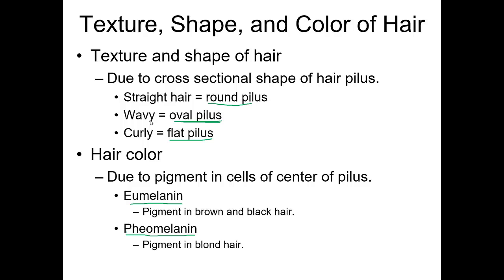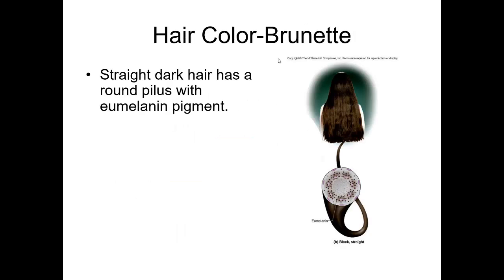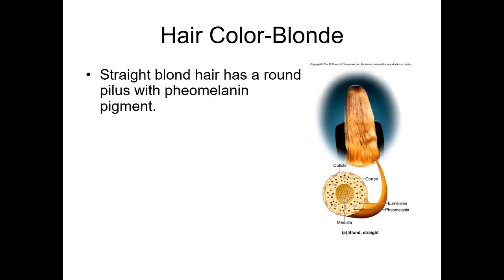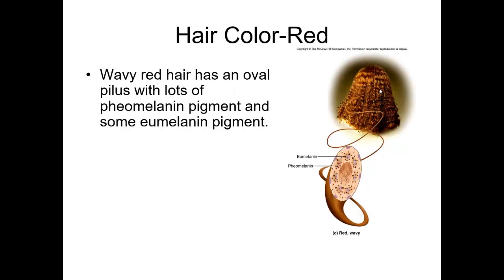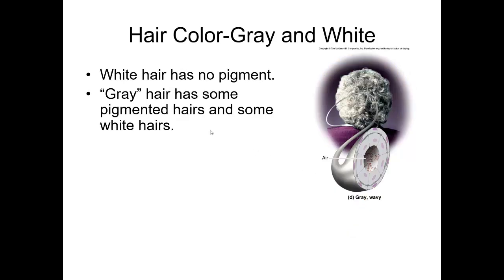Looking at examples: a person with very dark brown, almost black, relatively straight hair has a round pilus with eumelanin. A person with straight hair has a round pilus with a little eumelanin and a little pheomelanin. A person with wavy to curly red hair has a highly oval pilus with both eumelanin and pheomelanin. Gray hair is when some hair has pigment and some hair doesn't. White hair has no pigment at all.